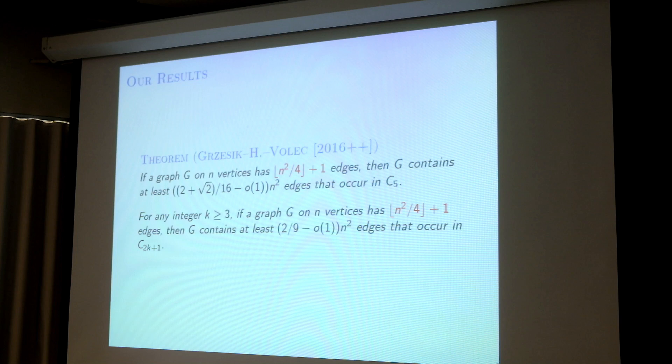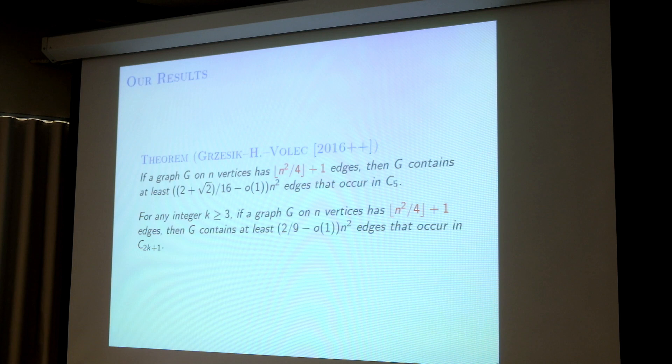So, is the result clear so far? This is about the density part. For an extremal problem, you first ask the extremal number. After you know the extremal number, what do you want to know next? You want to know something like the structure of the extremal graph. Before you look at the exact extremal structures, you may first start with the stability result. So that's what we did.